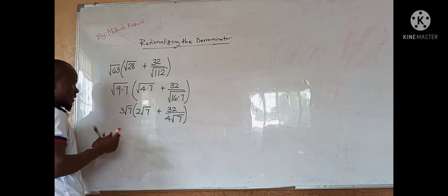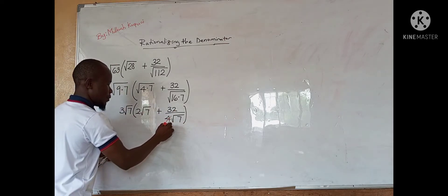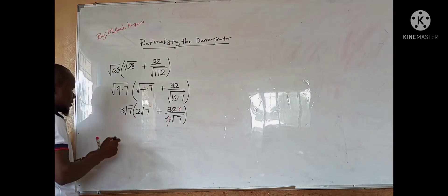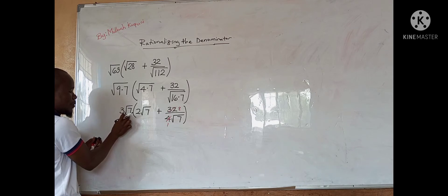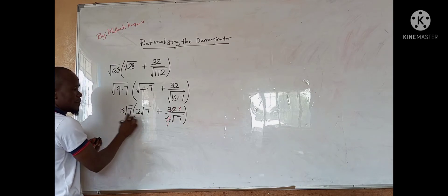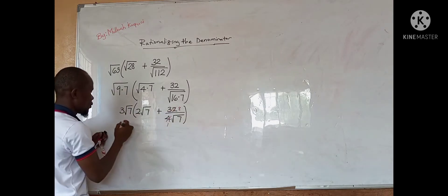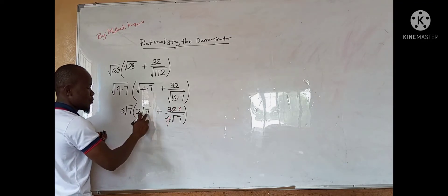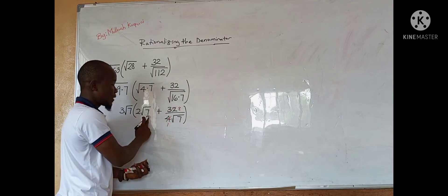So we can multiply this 3 root of 7 by everything in the denominator. 3 times 2 is 6, and 7 times 7 gives us the square root of 49.